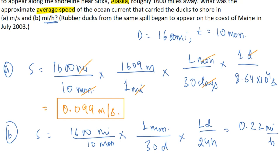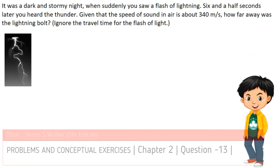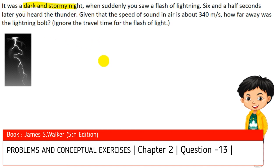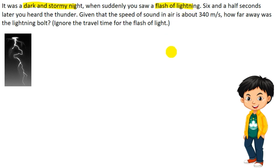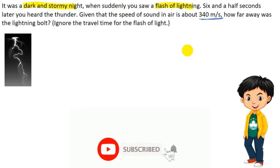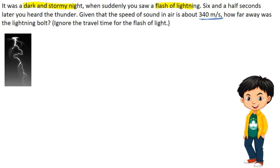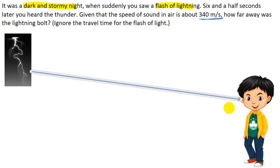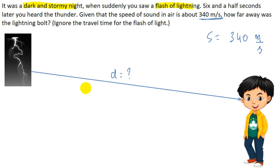In this question, on a dark and stormy night you see a flash of lightning, and 6.5 seconds later you hear the thunder. The speed of sound in air is about 340 meters per second. We have to calculate how far away the lightning bolt was. Sound propagates in a straight line from the thunderbolt to your ears, so we need to find distance d, with speed 340 m/s and time 6.5 seconds.